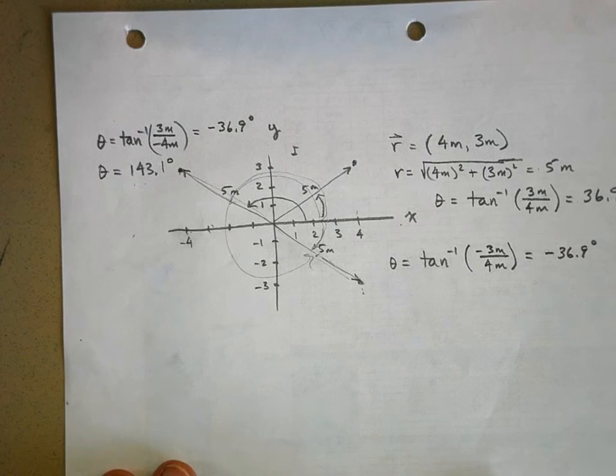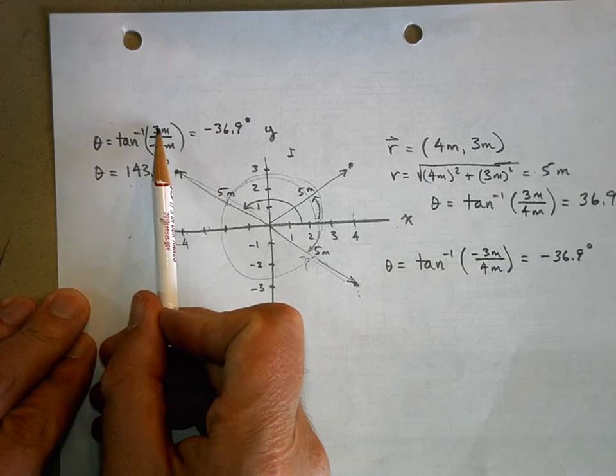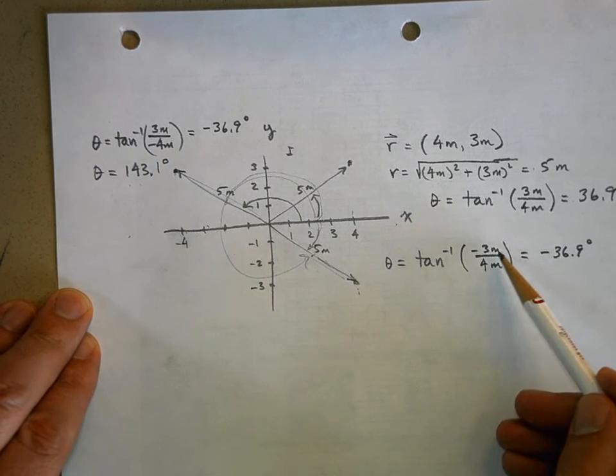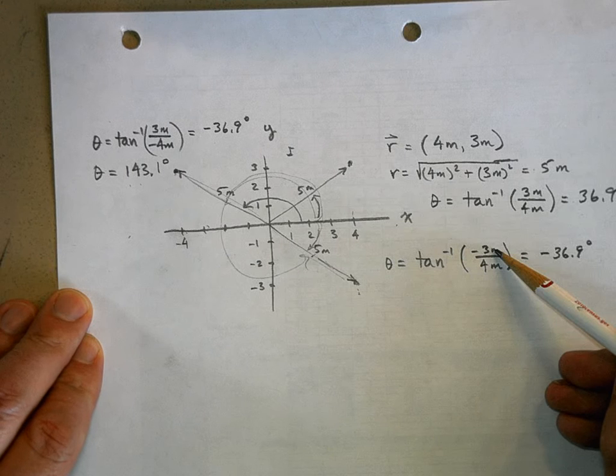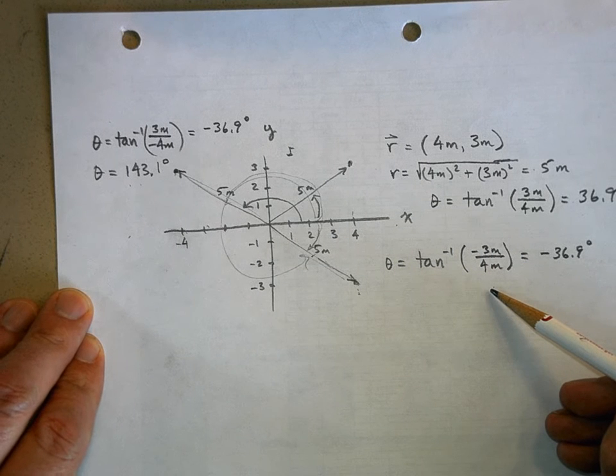Now, take a look at this. Why did this happen? Here we have 3 divided by negative 4. But over here, we have negative 3 divided by 4. It's the same answer.